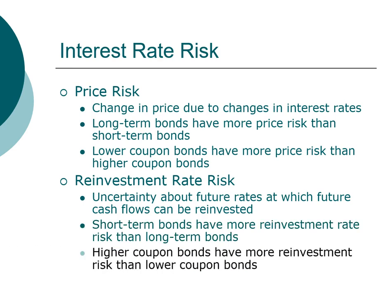The same applies when comparing low versus high coupon bonds: for a higher coupon bond, a larger proportion of your investment is returned via coupon payments, so a higher coupon bond has higher reinvestment risk. Price risk and reinvestment risk offset each other. For investors with a dedicated use for the money at maturity — such as saving for retirement or a down payment — matching the bond's maturity to that need eliminates reinvestment risk. If you don't know exactly when you'll need the money, you face both price risk and reinvestment risk.